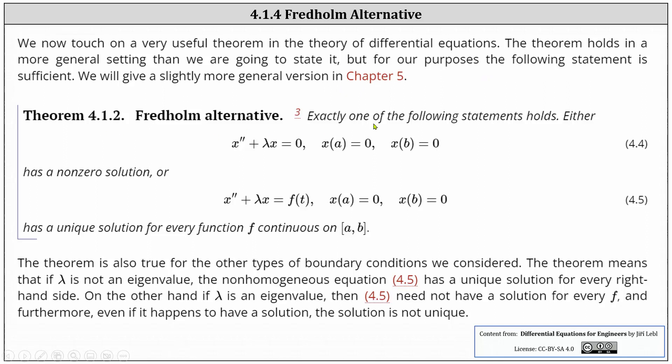The Fredholm alternative states exactly one of the following statements holds true. Either x double prime plus lambda x equals zero with x of a equals zero and x of b equals zero has a non-zero solution, or x double prime plus lambda x equals f of t with x of a equals zero and x of b equals zero has a unique solution for every function f continuous on the closed interval from a to b.